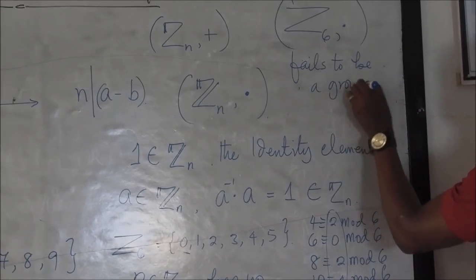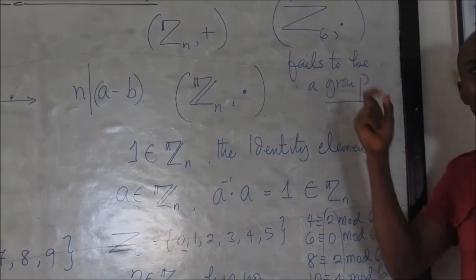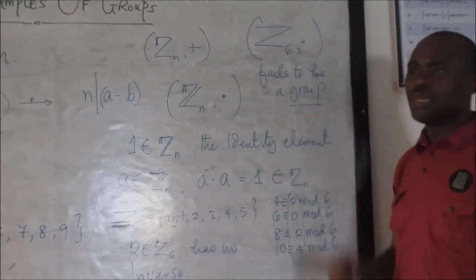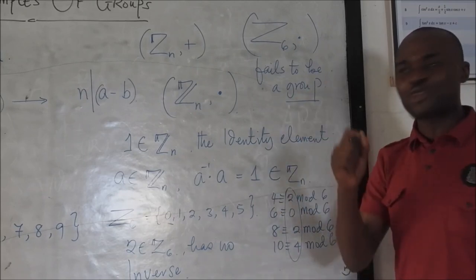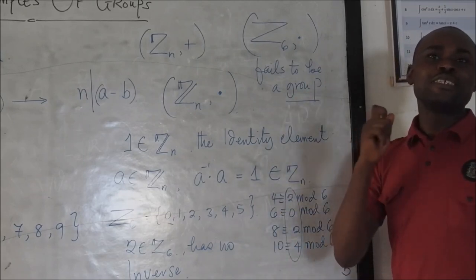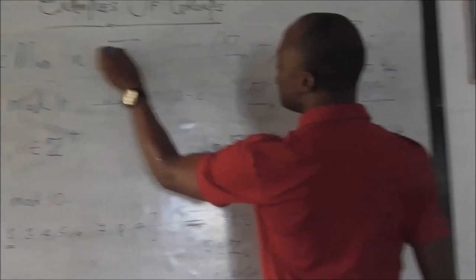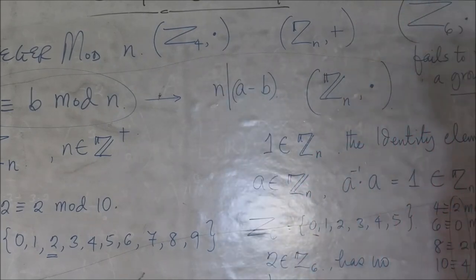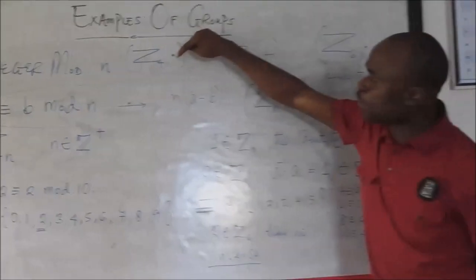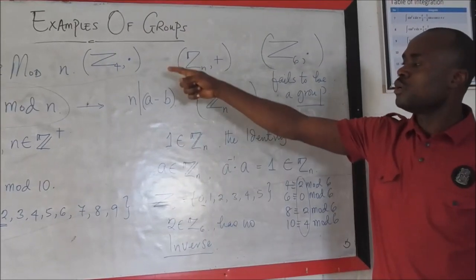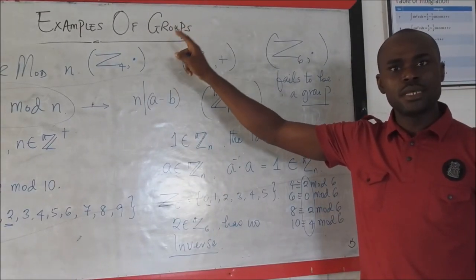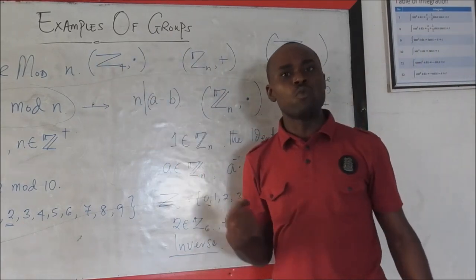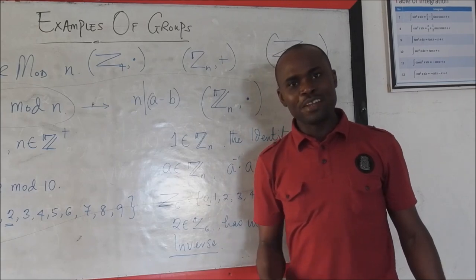Since 2 has no inverse, Z_6 under multiplication fails to be a group. Every element picked from a set must have an inverse for it to be a group. You can try the same thing with Z_4 — the same thing happens. Element 2 has no inverse there either, so Z_4 also fails to be a group. But there is good news.